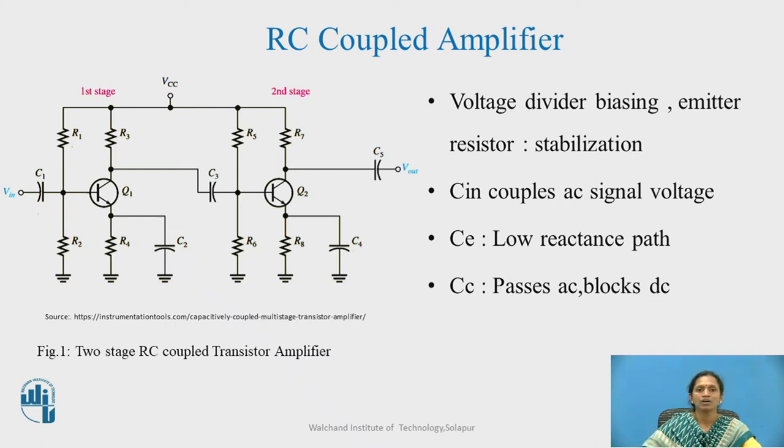This figure one shows the circuit diagram for the RC coupled amplifier. Here voltage divider biasing is used. This collector resistor will provide the input to the next stage that is base of the transistor Q2. We are using voltage divider biasing and emitter resistor is also playing the role to make the Q point stable.